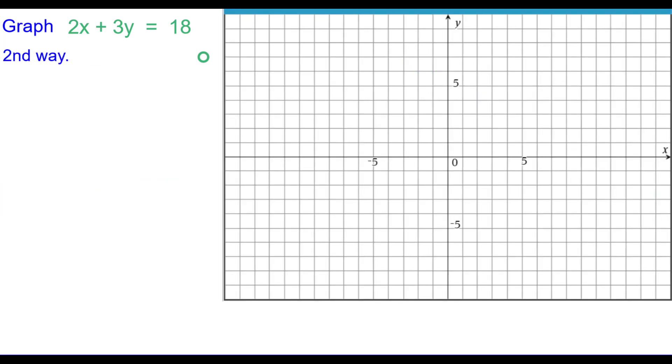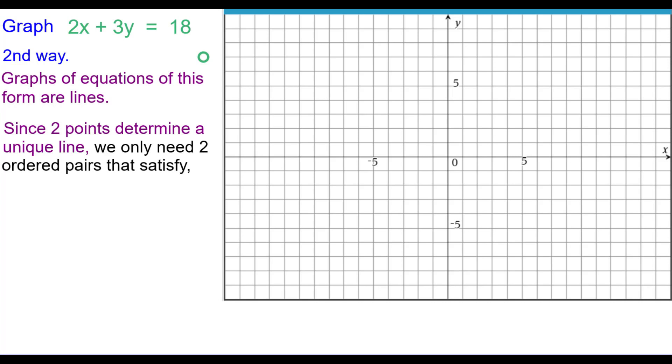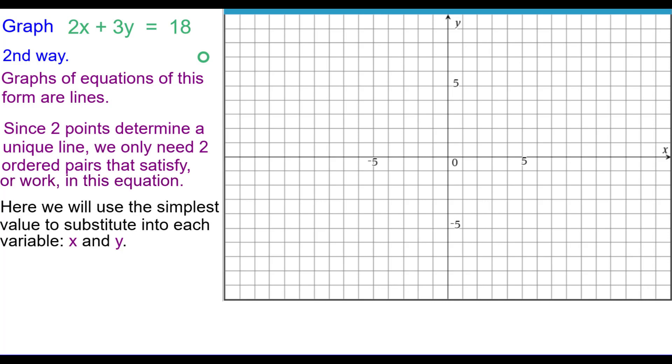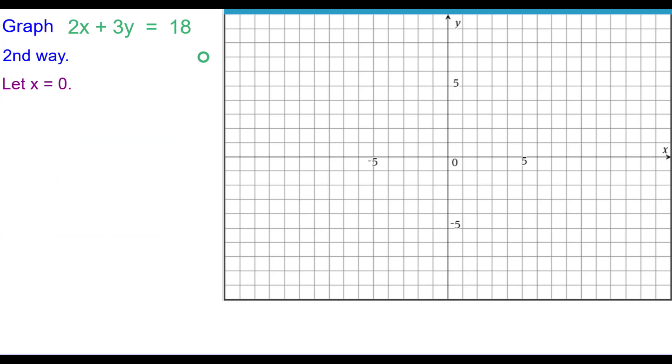Second way for this same equation. So graphs of equations form lines. And since two points determine a unique line, we only need two ordered pairs that satisfy or work in this equation. Here we use the simplest value to substitute into each variable X and Y. And that value is? Well, we think the simplest value is 0. So let's let X be equal to 0. Substitute into the equation and solve for Y. We'd like you to do that. So pause to answer and resume when you're finished.